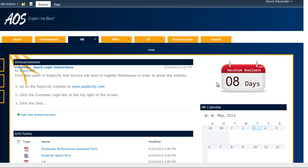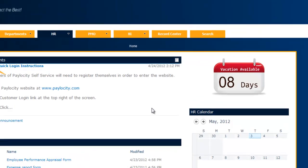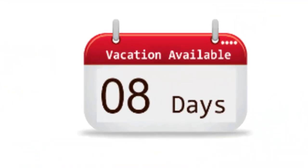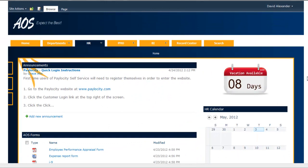One of the first things that may pop out to you is that we have provided some integration with our payroll system, and so we have a nice web part over here to the right that tells me how many vacation days I have accrued up until this date. Right now I've got eight vacation days. The reason I actually came here today is because I had some questions about my paycheck and some of the numbers that were on it.